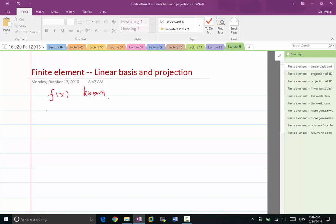So we first define a finite dimensional space. A finite dimensional space means a space of functions, a linear space of functions,